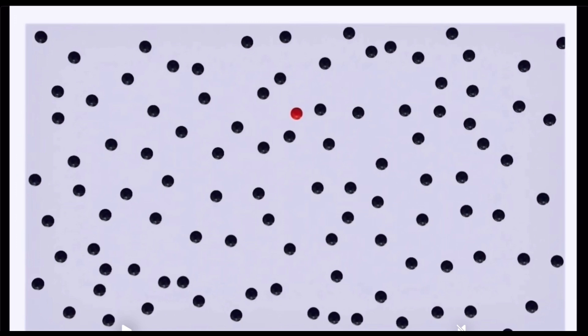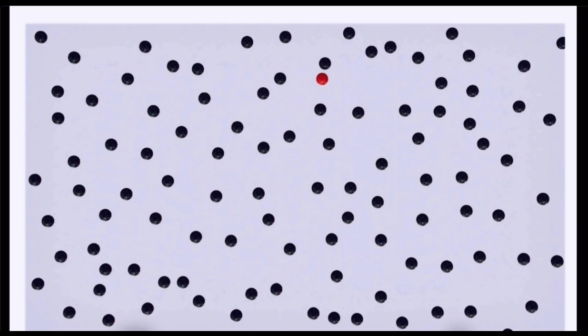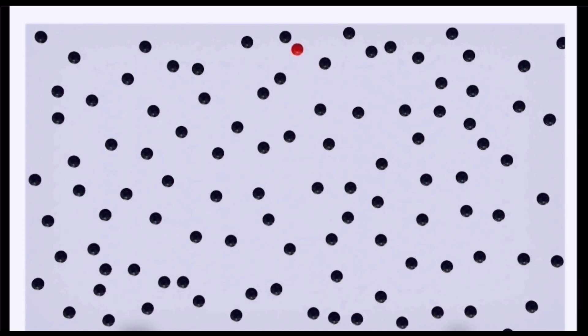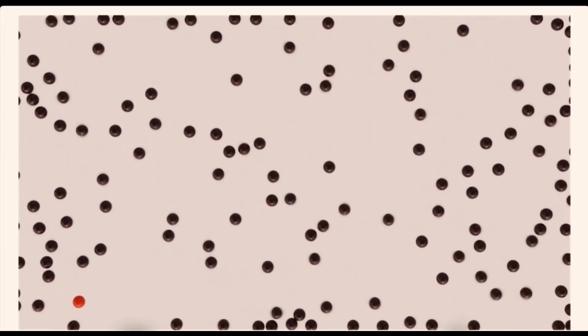Practically, the situation where only one molecule is moving and others are at rest is not possible — it is an imaginary situation used only to understand the definition of collision number. The red molecule is moving while other molecules are at rest, and in unit time the total number of collisions made by that one molecule is the collision number.